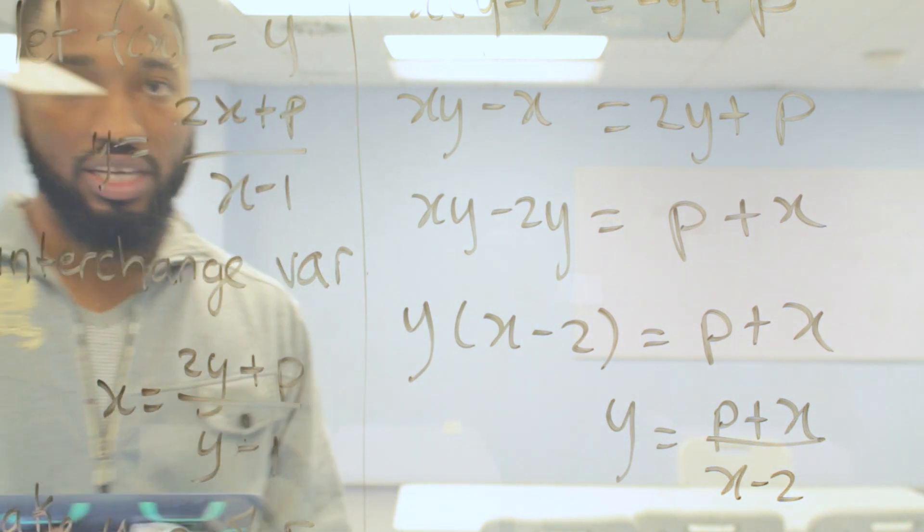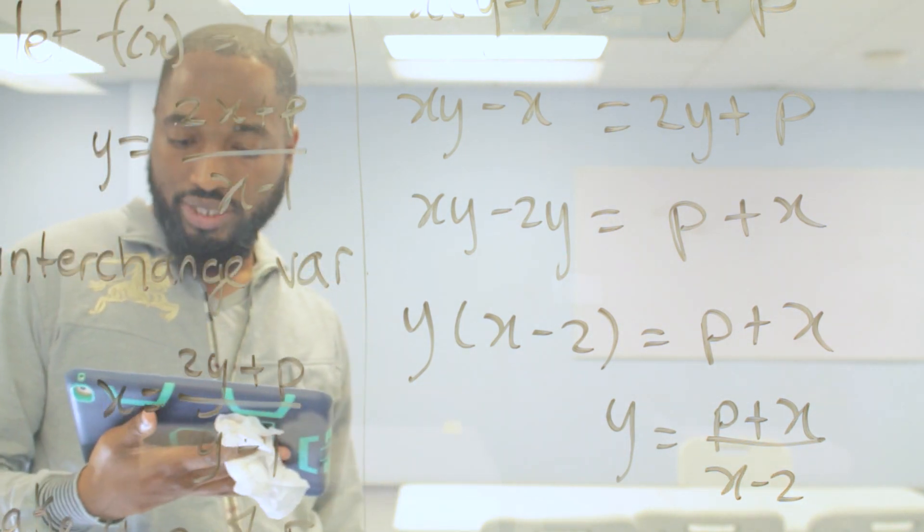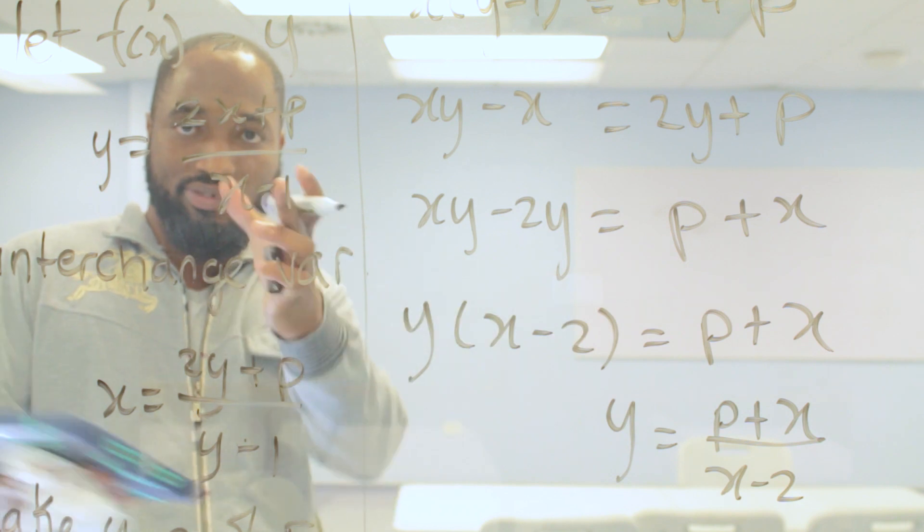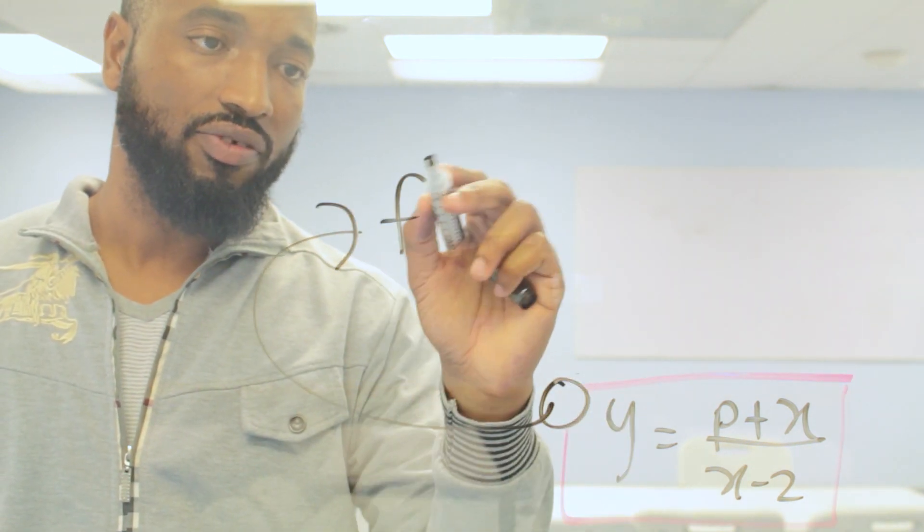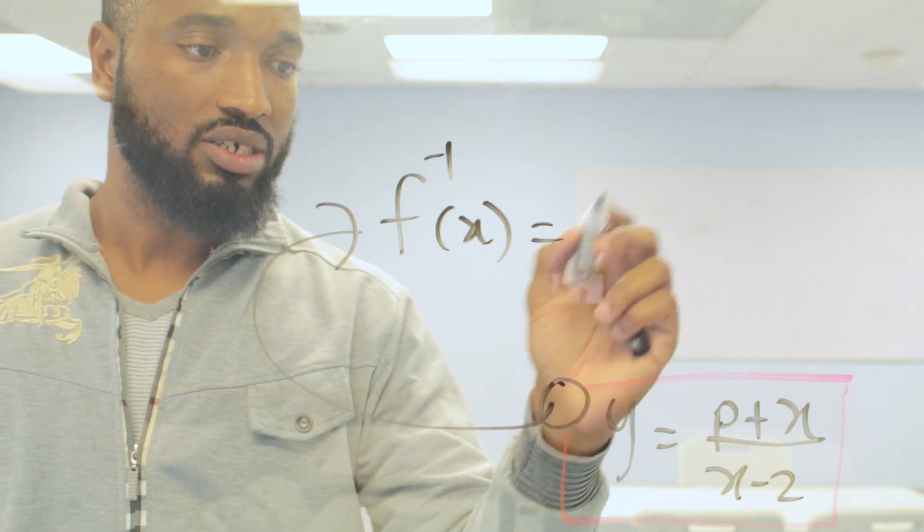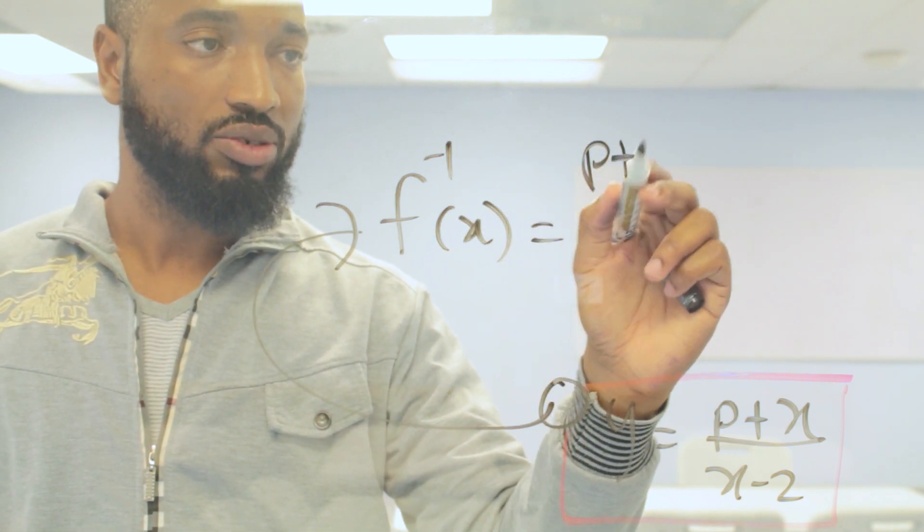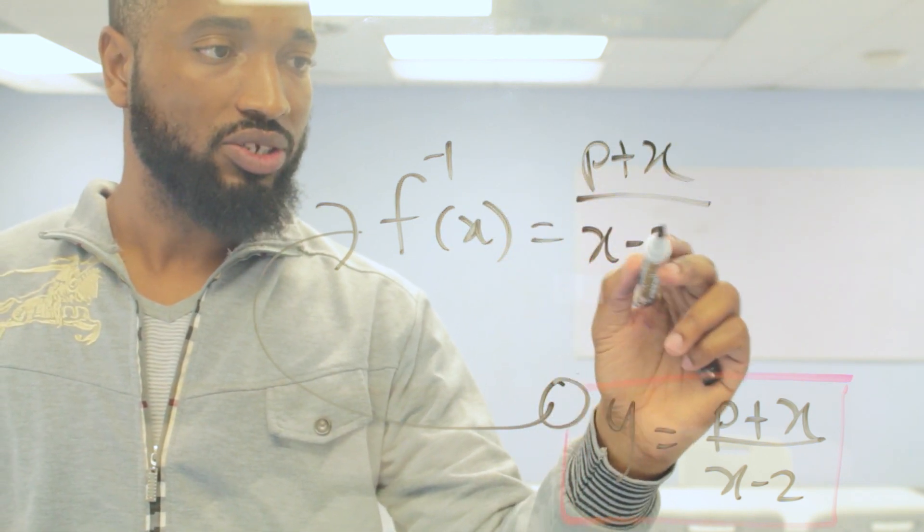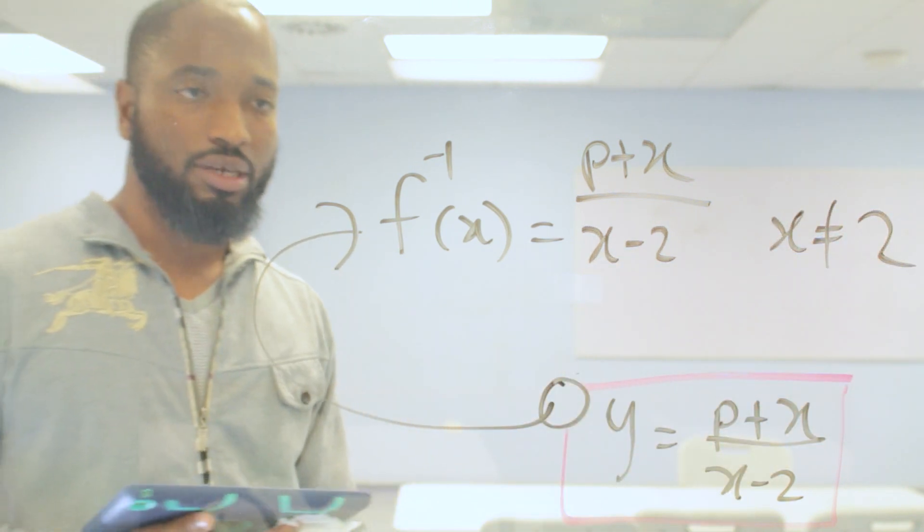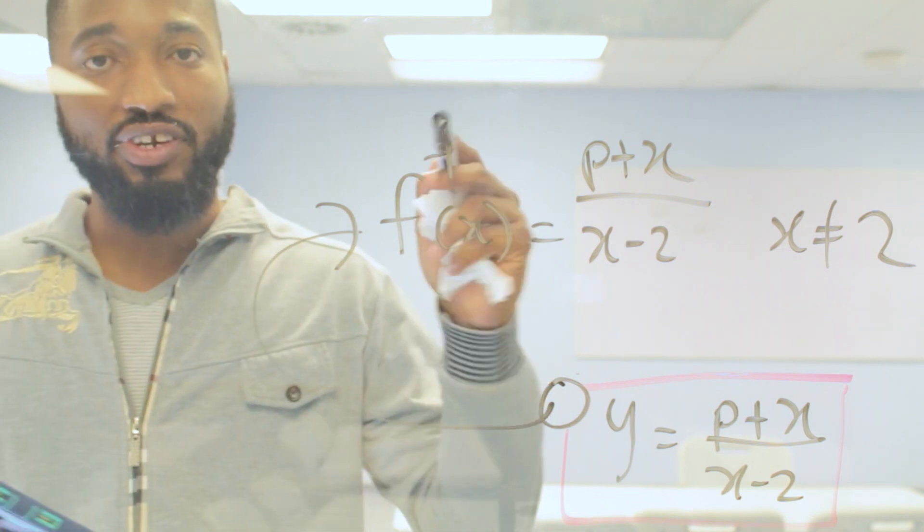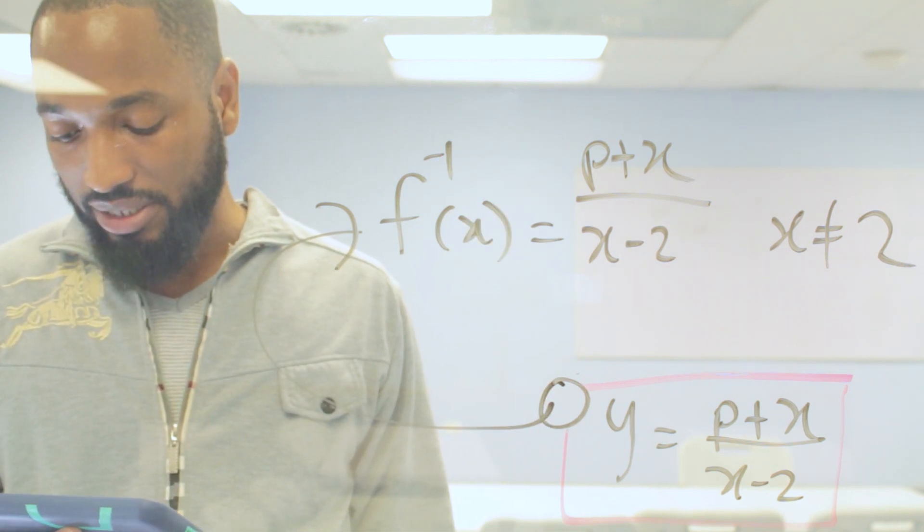So this is a straightforward question, first question in paper 2, 2017. I'm just testing out if this works. So your final answer is going to be the f inverse of x is equal to p plus x, or x plus p, whatever way, over x minus 2. And also state that x cannot be equal to 2. Anytime you have a denominator, make sure your denominator cannot be equal to 0. So this is the answer for the first part of the question from last year in AdMath.